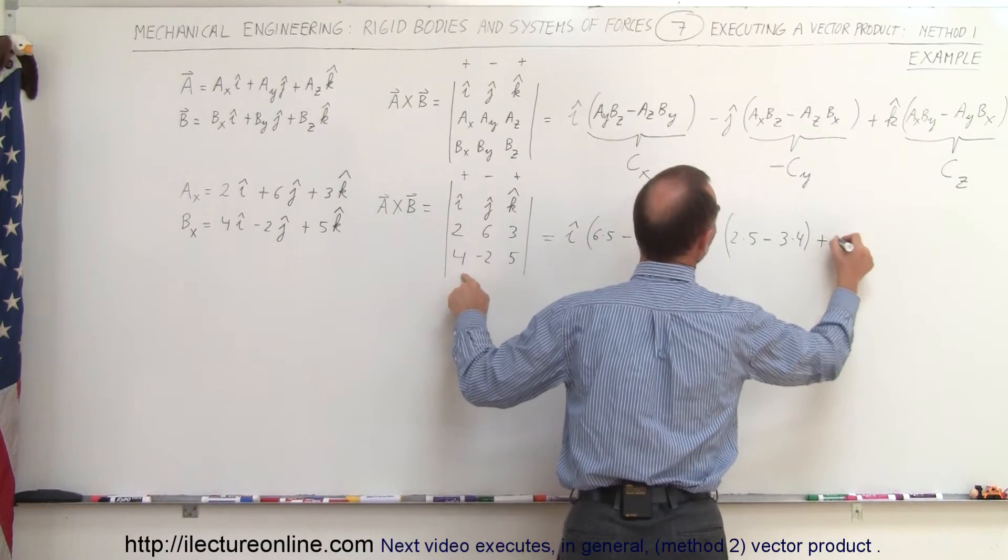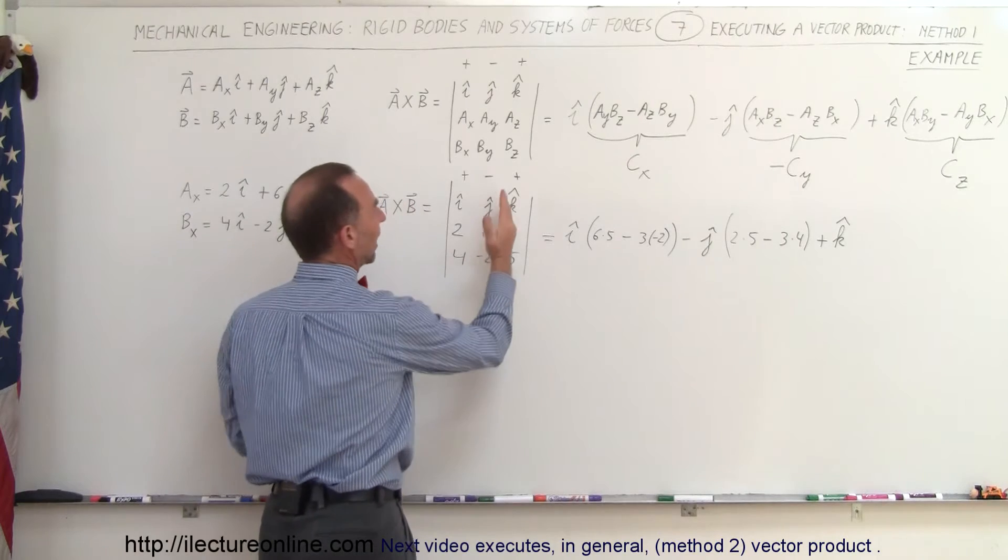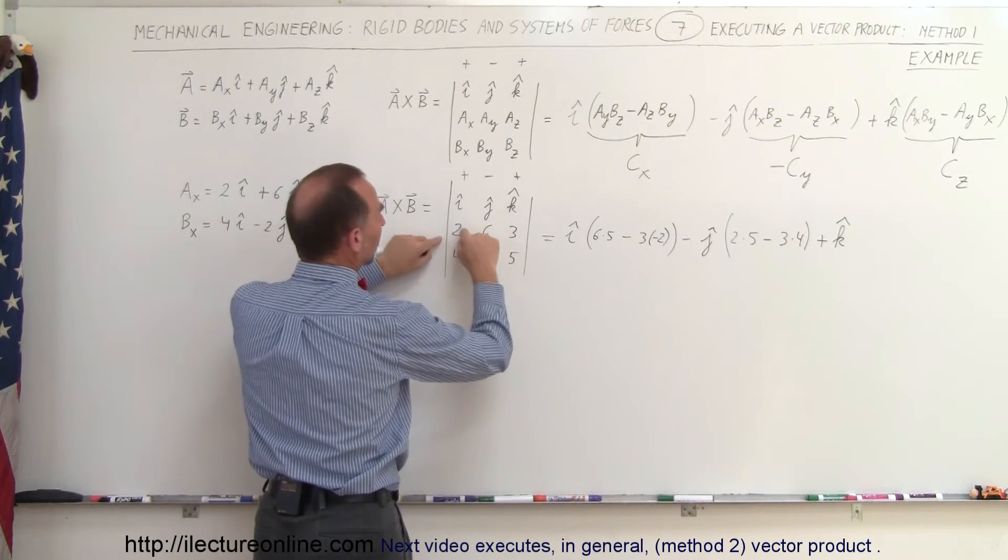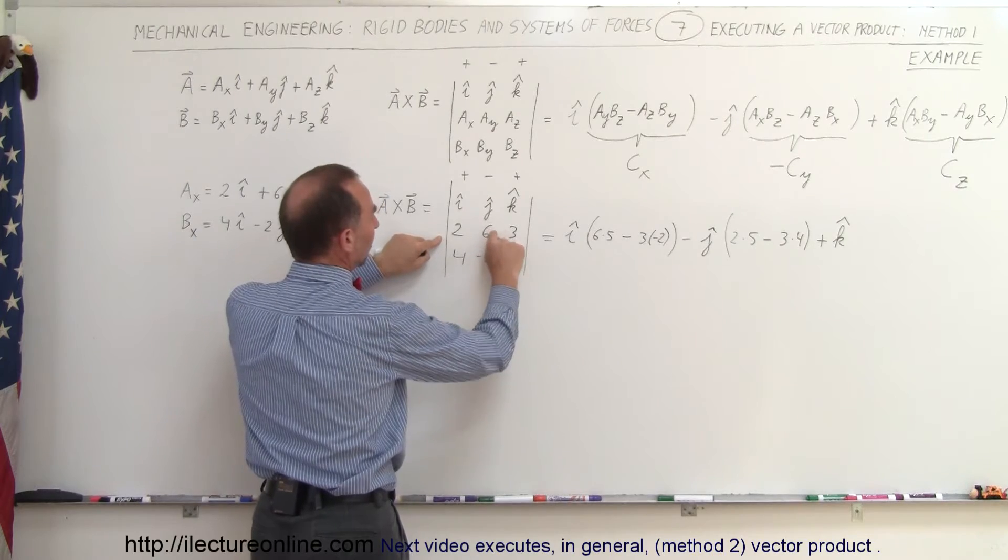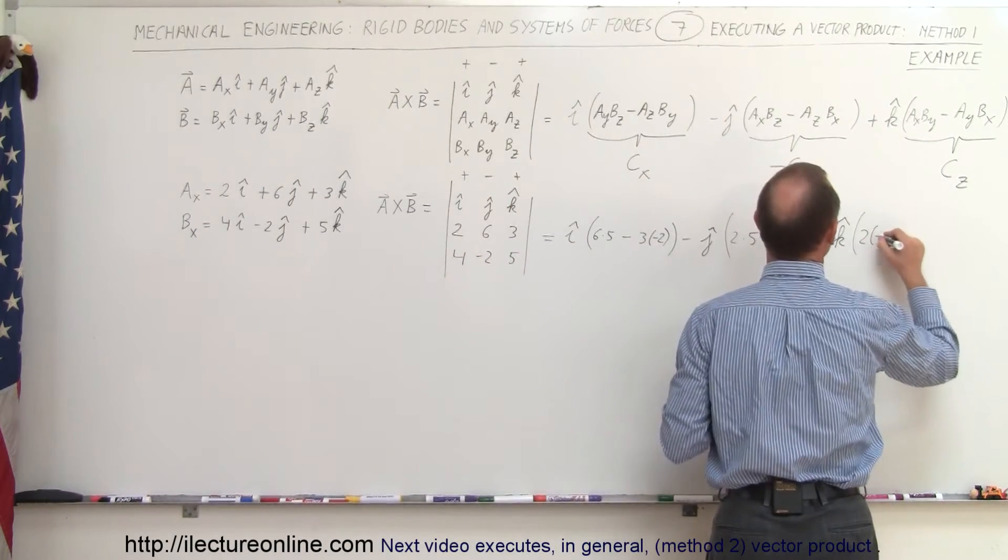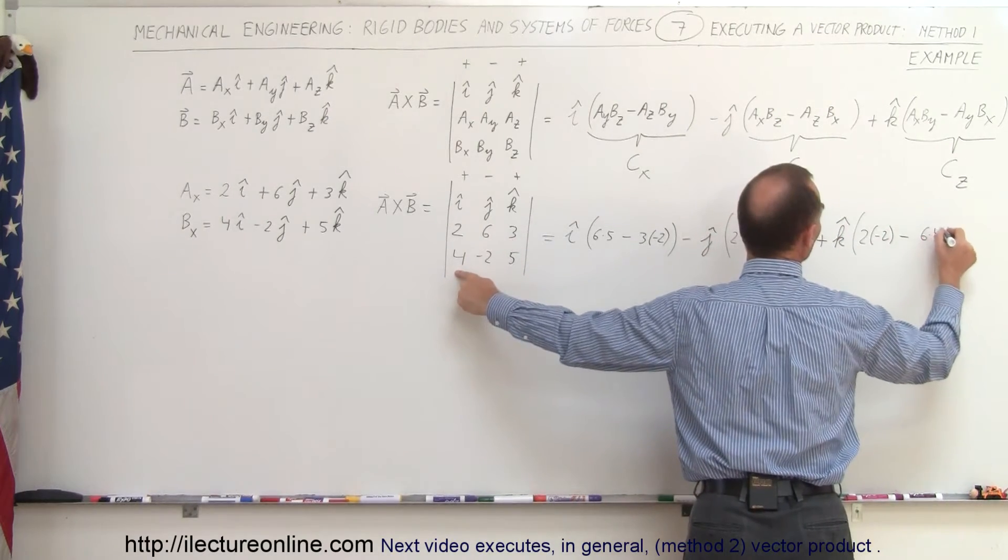And finally we get plus K. Again we alternate signs, it becomes plus again. When we pick the element K here, we cross out this column and this row, we end up with those four elements. We multiply those two together and then subtract, we multiply those two together. So this becomes 2 times the negative 2 minus, and that would be 6 times 4.